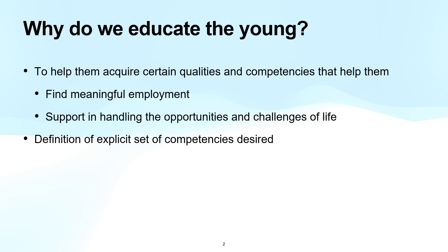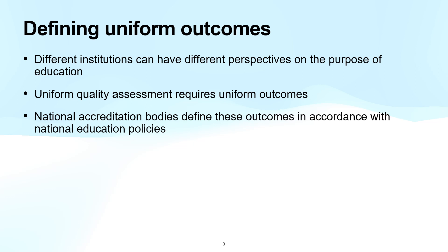This being a generic statement, it is important that we explicitly define the qualities and competencies so that we can strive to do something about them through the educational program. It is possible for different institutions to have different perspectives on this question of purpose. But since some level of uniformity is desired — for example, to facilitate uniform quality assessment of institutions within a nation — national accreditation bodies define the expected outcomes for each program. It is logical to expect that such outcomes are in consonance with the purpose of higher education as articulated by the relevant national education policies.